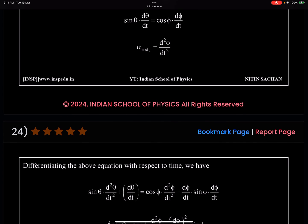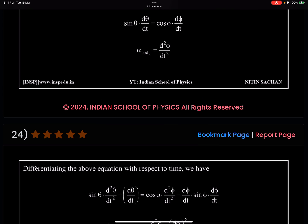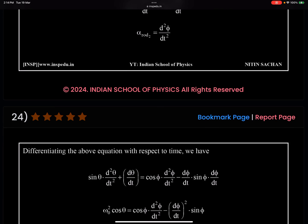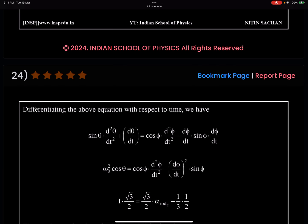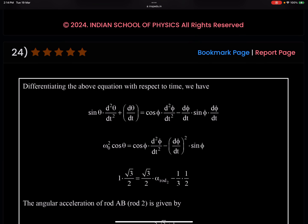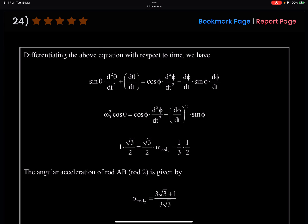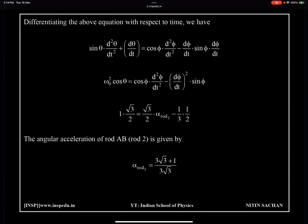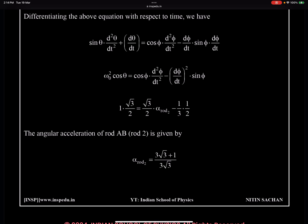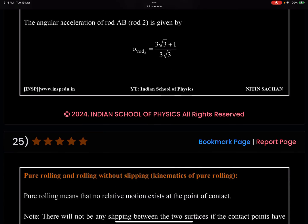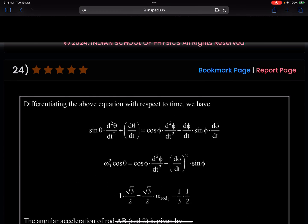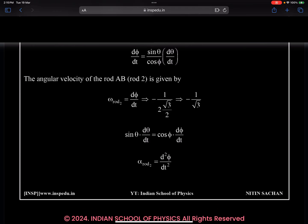I hope it is clear to you and will not create any trouble. By the way here instead of plus, dot sign will come. And similarly right side you can differentiate and from here you can get this value of alpha rod 2 which is d²φ/dt². Bring everything one side, substitute the values and we are going to get this angular acceleration of rod 2 as 3√3 plus 1 by 3√3. It is a very nice problem in my opinion and we have solved it using a different approach, unconventional approach.